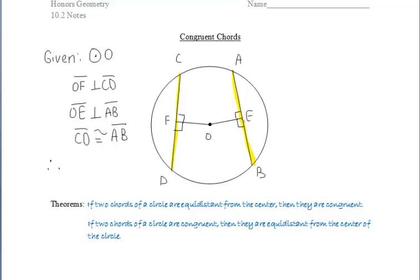So think about from last section, we know that if radii are perpendicular to chords, that they also bisect the chords. So as a result, we get those four segments congruent. CF is congruent to FD and AE is congruent to EB.